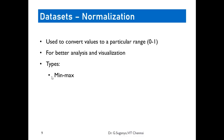Other normalization methods like Z-score and standard scalar are also available — normalization is a mathematical concept you can use to bring all attribute values into a standard range. If you want values in a range of 1 to 10, normalize and multiply accordingly. In the coming session, we will continue with feature selection, dimensionality reduction, and correlation analysis.